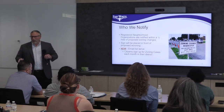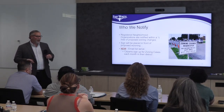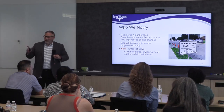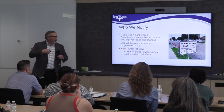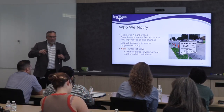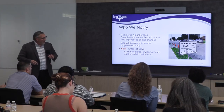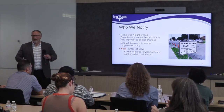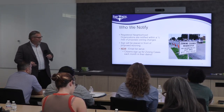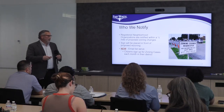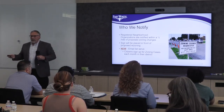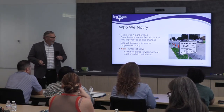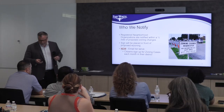We also notify registered neighborhood organizations within a half mile. We have a neighborhood database online — if you just type in 'neighborhood database,' you can find out what neighborhoods are within your half mile. Also, a sign will be posted in front of the property. We also have a new email listserv: if you sign up for a certain district, you can get emails about zoning changes happening within your neighborhood.